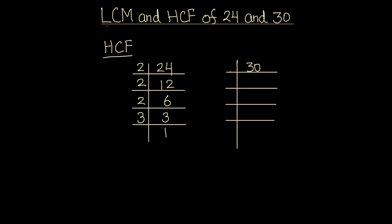Now we will divide 30. 30 divided by 2 gives 15. Now 15 is an odd number, so it is divisible by the next prime number 3. 3 times 5 is 15. And 5 is a prime number — it is only divisible by 5, so 5 times 1 is 5. So the prime factors of 30 are 2, 3, and 5.